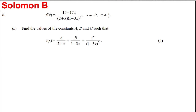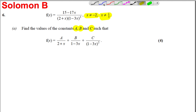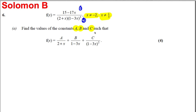We're trying a second question on partial fractions for C4. They give us a function f(x) and tell us that x can't be negative 2 and x can't be a third, otherwise the denominators would be zero. We need to find the values of A, B, and C. The form of the partial fraction is given: a linear on top and a cubic on the bottom, so it's A over the first factor, B over the second, and C over the second one squared.